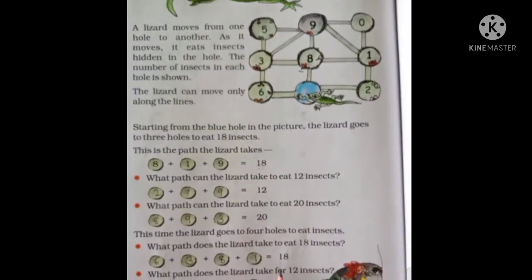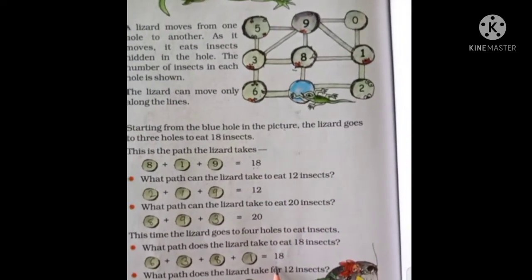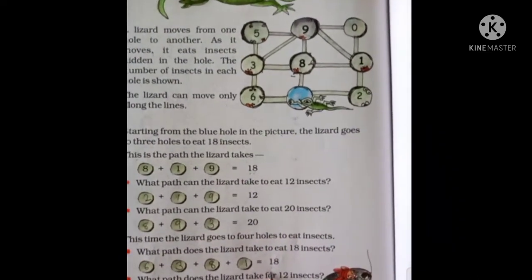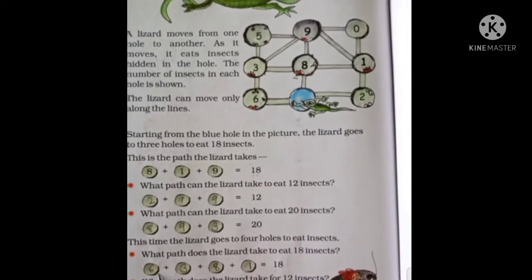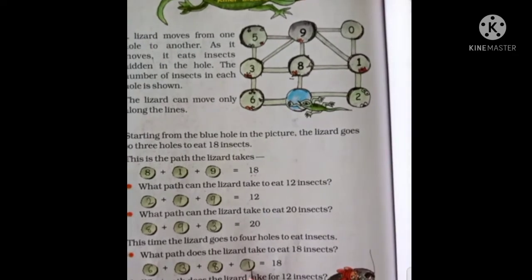Understood this? Six plus three is nine. Nine plus one is ten. Ten plus eight is eighteen. Total 18.